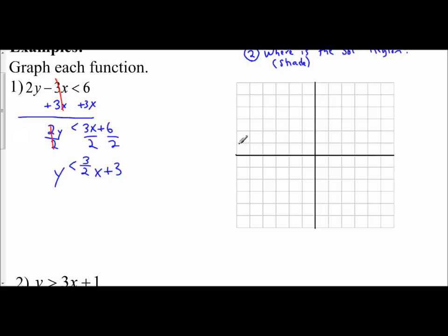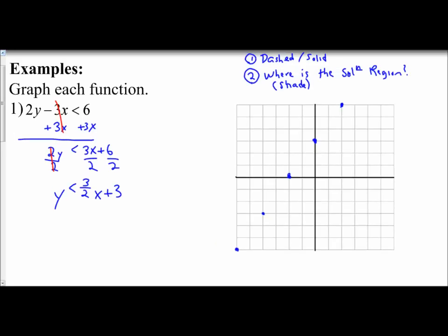Now I'm going to graph this. I have a y-intercept of 3 and a slope of 3/2, so up 3 to the right 2, and down 3 to the left 2. Now I have to ask myself the first question: is it a dashed or solid line? Looking at my inequality symbol, it says y is less than, so the less than tells me I'm going to use a dashed line. I graph my dashed line through all my points.